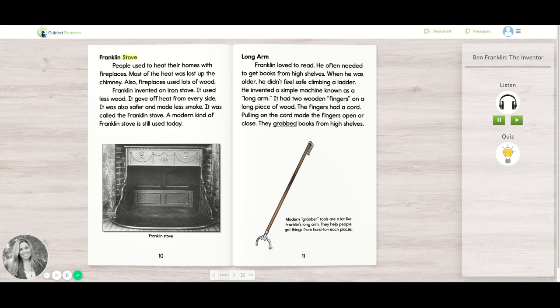Franklin Stove. People used to heat their homes with fireplaces. Most of the heat was lost up the chimney. Also, fireplaces used lots of wood. Franklin invented an iron stove. It used less wood. It gave off heat from every side.